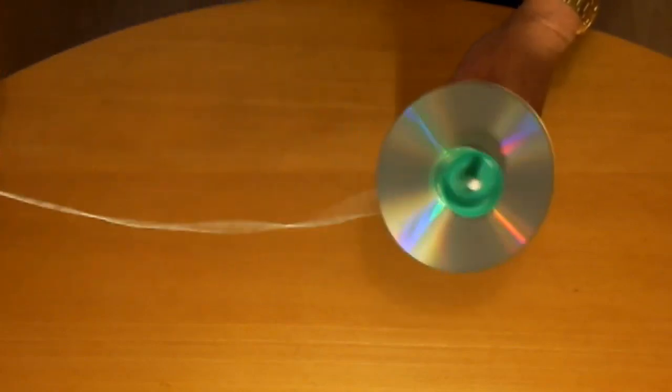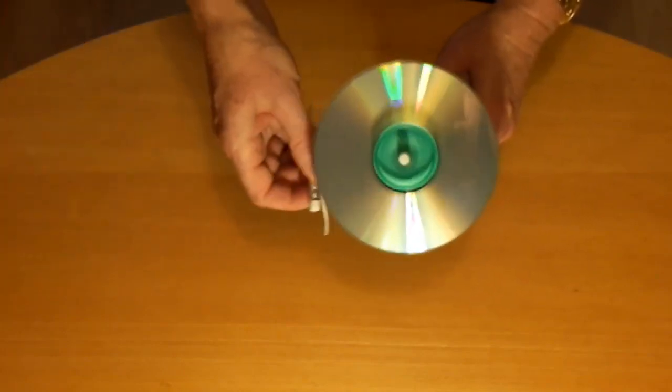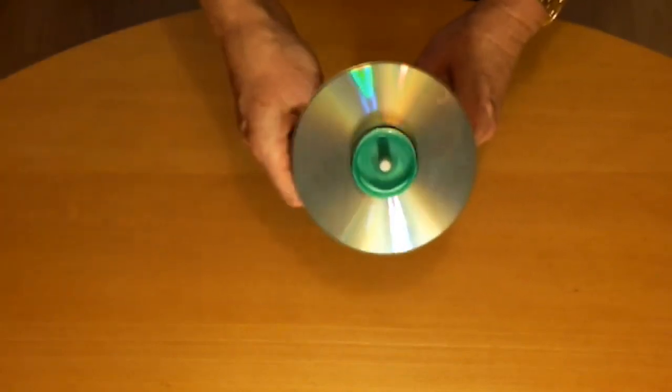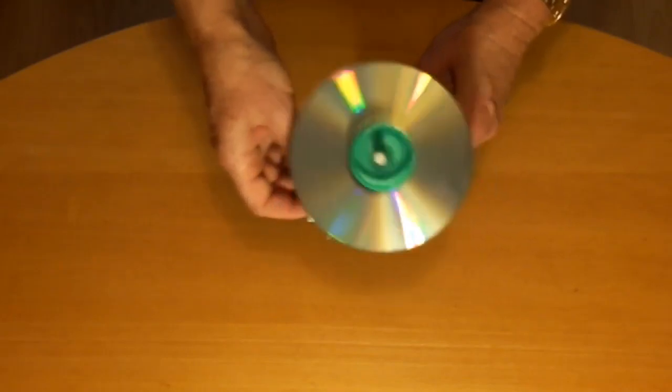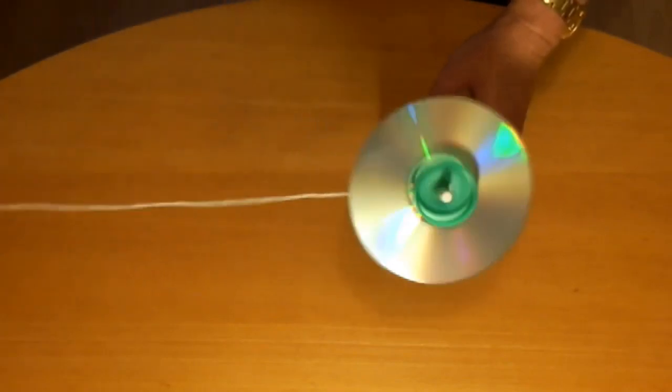As soon as the string is fully out, start to bring the handle in again. The spindle should carry on turning and wind the string back in. Once the string is in, hold on the handle again to turn the spindle away.